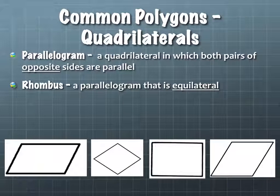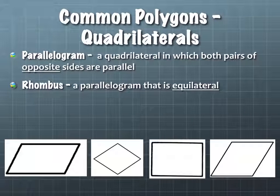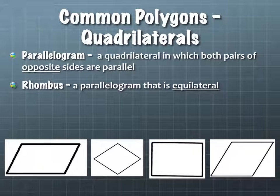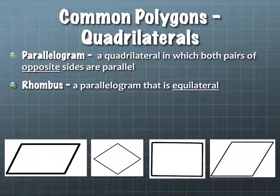A rhombus is a parallelogram that's equilateral. So it has two pairs of parallel sides, and all four sides are the same length.